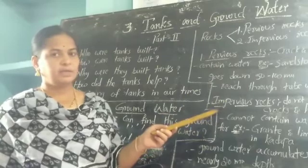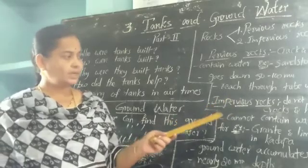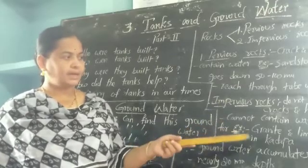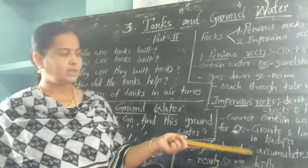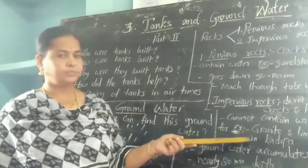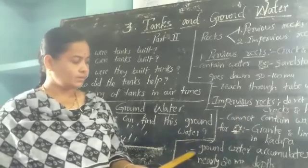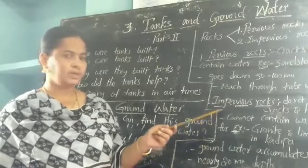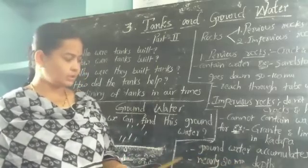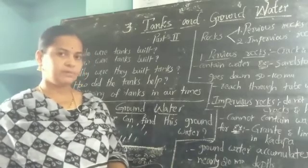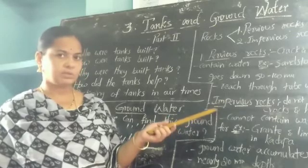The second type is impervious rocks, which do not have cracks and holes and cannot contain water. For example, granite and limestone are found in Prakasam district in Rayalaseema. Since they do not have cracks and holes, they cannot contain water. Groundwater accumulates above the impervious rocks, so we can get water at nearly 20 meters depth. We get well water from this layer, through the impervious rocks.